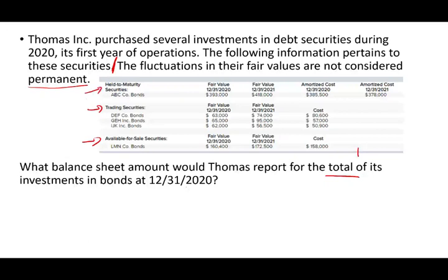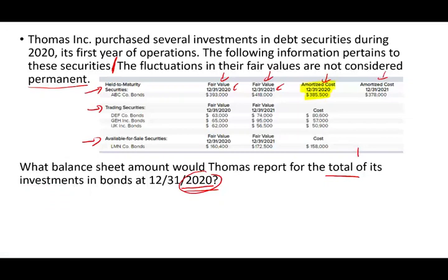So let's start to add up our investments for year 2020. Starting with held-to-maturities — we have fair value for 2020, fair value for 2021, amortized cost for 2020, and amortized cost for 2021. They're giving you two different years. The year we're looking for is 2020. Since this is held-to-maturity, we're going to choose the amortized cost for year 2020. So the first figure is $385,500.